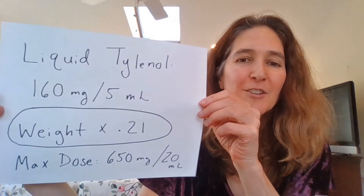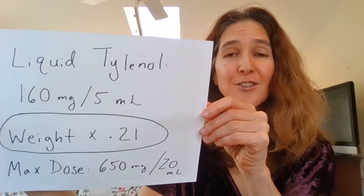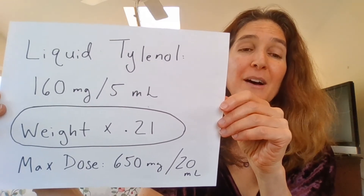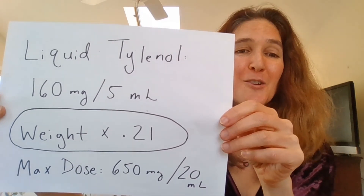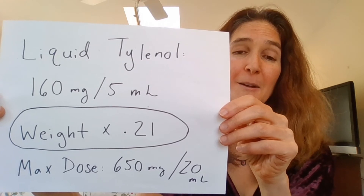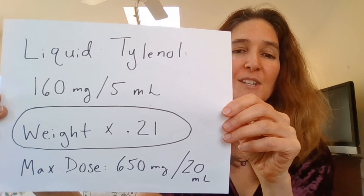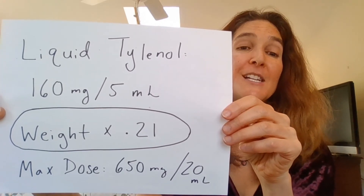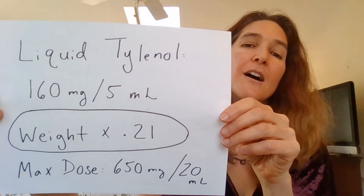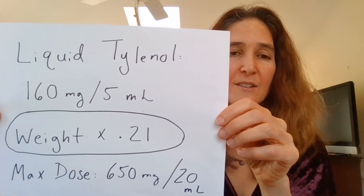Now let's talk about Tylenol — liquid Tylenol. There is only one formulation; there's not a children's versus an infant version. There's one formulation of 160 milligrams per 5 mLs. There used to be an infant formulation, but because there were so many inadvertent overdoses, that was changed. Take your child's weight in pounds, multiply times 0.21, and that will give you the dose in mLs. The maximum dose of Tylenol listed here is 650 milligrams, which is 20 mLs of the liquid. Calculate your child's exact dose: weight times 0.21.